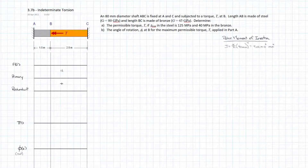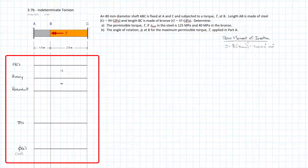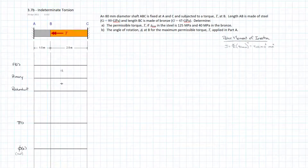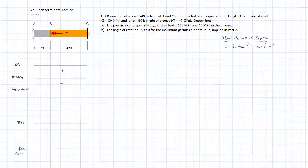We'll calculate the value of T and pick the lower one that limits stress sufficiently, then calculate the angular rotation at B. I've laid out the entire series of diagrams I need: the free body diagram, primary system, redundant system, torque force diagram, and angle of twist. This is a statically indeterminate problem, and I'm going to use the method of superposition, breaking it into a primary and redundant system, forming a compatibility equation, applying static equilibrium, and resolving reactions.